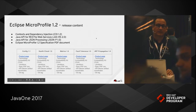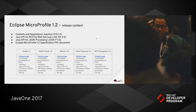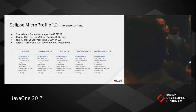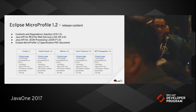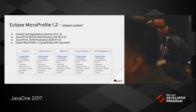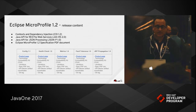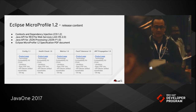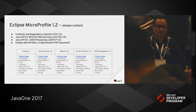So what's in MicroProfile 1.2? There was an update to Config 1.1, Health Check 1.0, Metrics 1.0, Fault Tolerance, and JWT Propagation. This slide includes links for each of the product pages, as well as links to the TCKs, Technology Compatibility Kits, Java docs, spec PDF documents, API Maven artifacts, and Git tags.